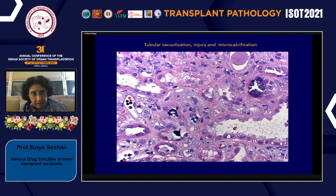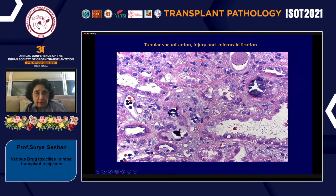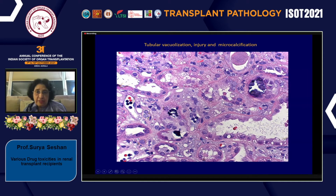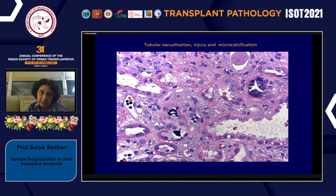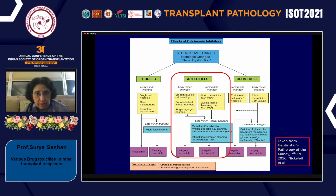Over time, residual isometric tubular vacuolization may persist, but dark tubular microcalcific bodies appear as tubules undergoing severe injury begin to calcify, causing tubular loss. Due to persistent tubular injury, margination of peritubular capillaries by inflammatory cells may be seen. This is a late finding, and some patients may not recover their baseline creatinine.